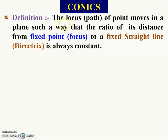Conics: the locus or path of a point that moves in a plane in such a way that the ratio of its distance from a fixed point, which is known as a focus, to a fixed straight line, which is known as a directrix, is always constant. So, conics or conical curves are the path followed by a point such that the ratio of its distance from a fixed point to a fixed straight line is always constant.